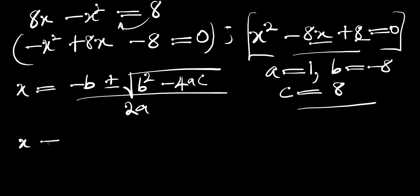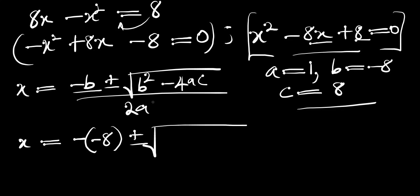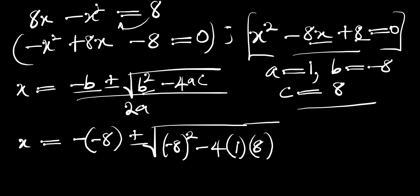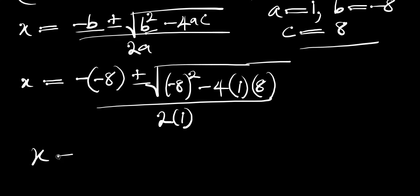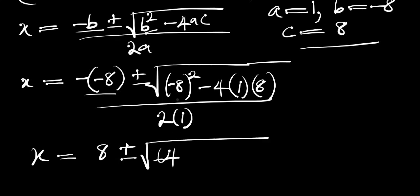So we are going to insert these values for a, b, and c. We are going to have x equals negative into negative 8, plus or minus the square root of negative 8 squared minus 4 times 1 times 8, all divided by 2 times 1.